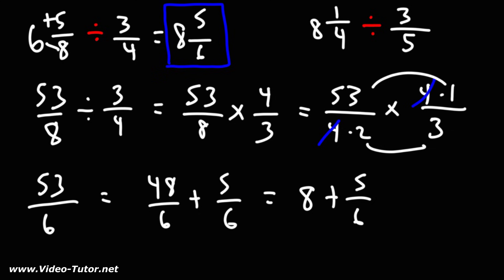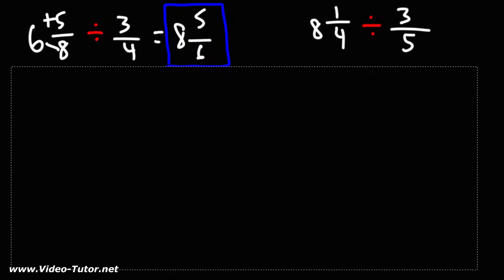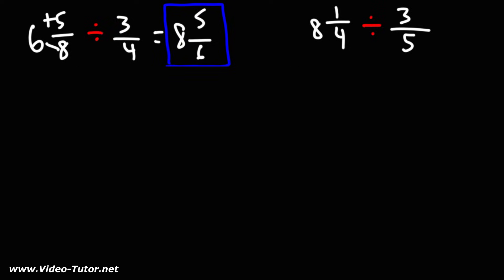Now let's move on to the next example. Feel free to pause the video if you want to try it. Let's convert the mixed number into an improper fraction. Let's begin by rewriting the denominator 4. 8 times 4 is 32, plus 1, that's 33. So we have 33 over 4 divided by 3 over 5.